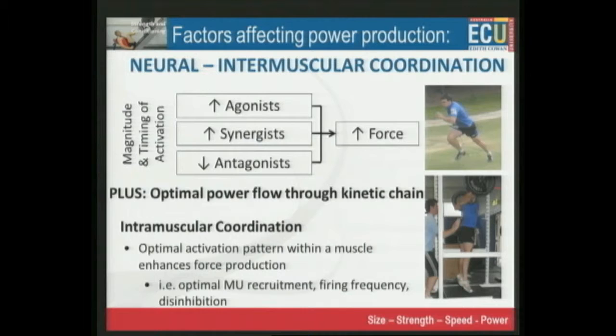This is a highly trainable part of the neural system. We're looking at the magnitude and timing of activation of the muscles involved in a movement. If you look at a movement which you might think is simple — a vertical jump — it's not simple by any means. People spend their entire careers doing nothing else but trying to understand the counter-movement jump.